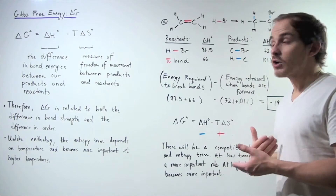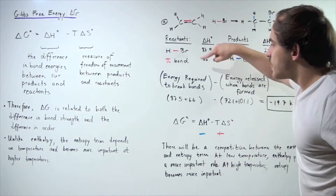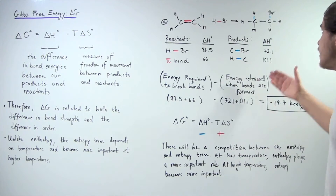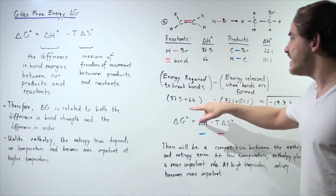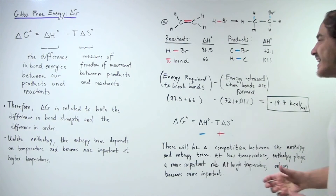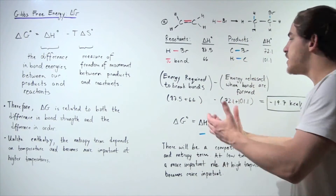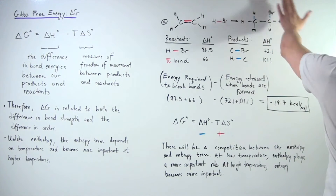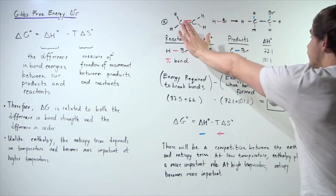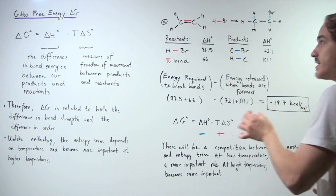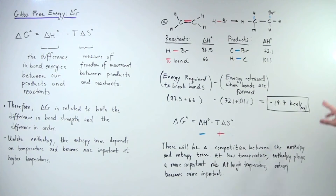To find the change in enthalpy, we simply take the energy required to break the bonds in our reactant side minus the energy released by the bonds that were formed. Adding the reactant bond energies and subtracting the product bond energies gives us negative 19.7 kcal/mol. Less energy was required to break the bonds than the energy produced when bonds formed, meaning energy is released and our products are more stable. Therefore our change in H is negative — it's exothermic.